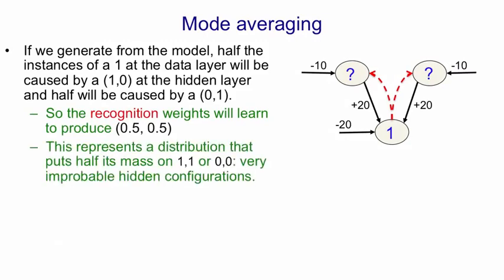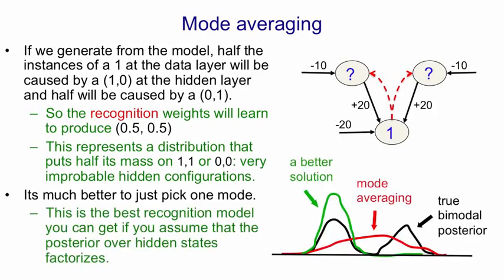Now that factorial distribution puts a quarter of its mass on the configuration 1, 1 and another quarter of its mass on the configuration 0, 0 and both of those are extremely unlikely configurations given that the visible unit was on. It would have been better just to pick one mode. That is, it would have been better for the visible unit just to vote for truck or just to vote for earthquake. That's the best recognition model you can have. That's the best recognition model you can have if you're forced to have a factorial model.